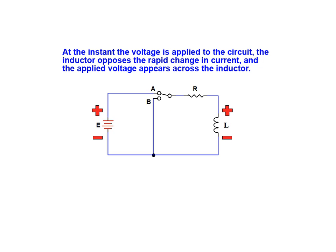At the instant the voltage is applied to the circuit, the inductor opposes the rapid change in current and the applied voltage appears across the inductor.